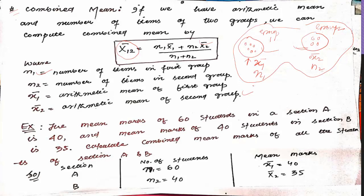Now let's understand this with an example. The question is: the mean marks of 60 students in Section A. This means n₁ equals 60. The mean marks of 60 students in Section A is 40, so x̄₁ equals 40.